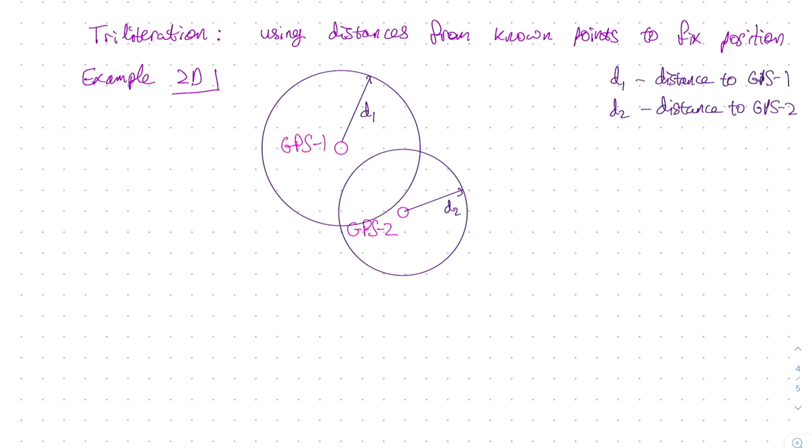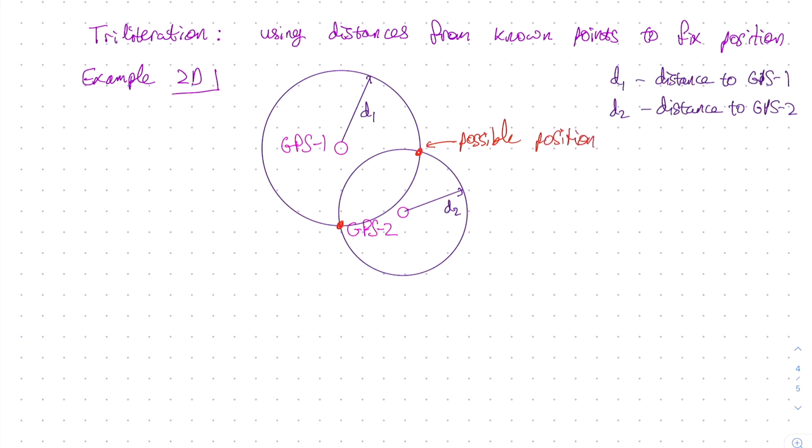Now because our receiver has measured both D1 and D2 at the same time, we know that we are at a point where these two circles intersect, and in fact there are two such points, corresponding to the two possible positions of our GPS receiver. The process of identifying these two points is called trilateration.